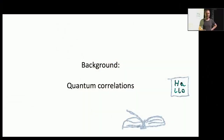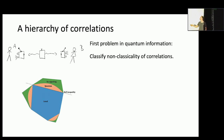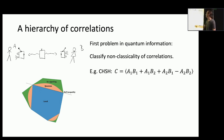Let's start very softly with some background on quantum correlations. Let's go back to what is maybe the first problem to be considered in the field that later became quantum information: classifying the degree of non-locality in correlations. We look at experiments where there are several observers — Alice here, Bob on that side — and they perform measurements on a quantum state prepared at some central source, and we look at the log of the data and want to understand whether it is compatible with classical information or not.